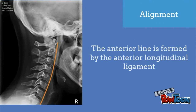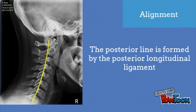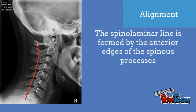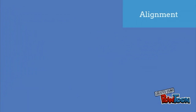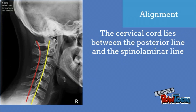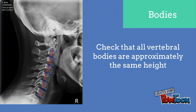Alignment: the anterior line is formed by the anterior longitudinal ligament — draw this by joining the anterior portion of the vertebral bodies, and this should form a smooth continuous curve anteriorly. The posterior line is formed by the posterior longitudinal ligament, drawn joining the posterior borders of each vertebral body. The spinal laminar line is formed by the anterior edges of the spinous processes and is particularly important for subluxation of the vertebra. The cervical cord lies between the posterior line and the spinal laminar line. Check that all vertebral bodies are approximately the same height, as shortening of a body may indicate a compression fracture.